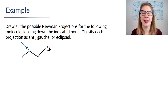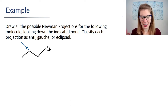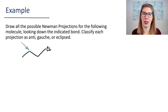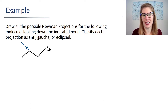This is exactly the type of question I want you to be able to do: look at a structure, draw its Newman projection, take that Newman projection and use it to draw the rest of the Newman projections, and then classify these as anti, gauche, or eclipsed. Finally, you should also be able to identify which conformation is the most stable and which is the least stable.